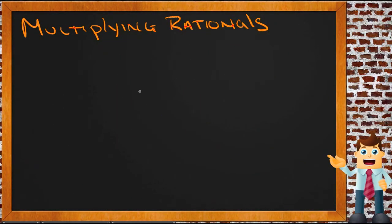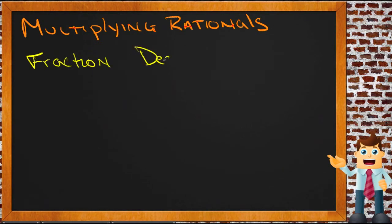How do you multiply rational numbers? That's really three questions in one, because multiplying rational numbers means you're multiplying a number that can be expressed as a fraction, which could also be expressed as a decimal. So really what you're asking is: how do you multiply fractions, how do you multiply decimals, and how do you multiply positive or negative numbers? Let's take each of those parts individually.